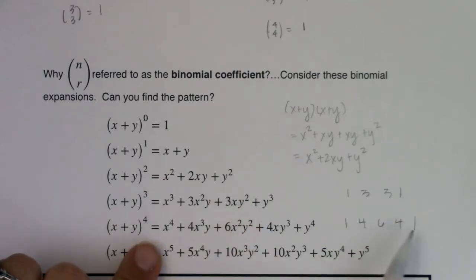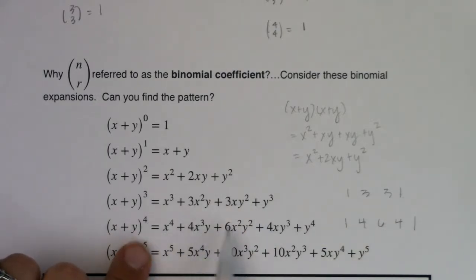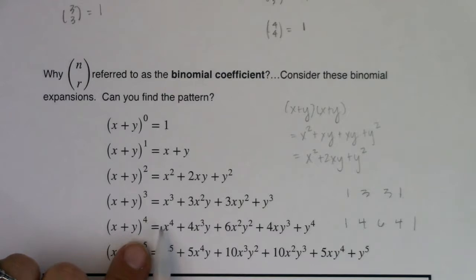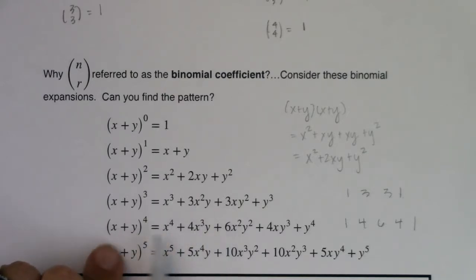1, 4, 6, 4, 1 — right? 1, 4, 6, 4, 1. So these numbers, these binomial coefficients, are literally the coefficients in front of these binomial expansions.